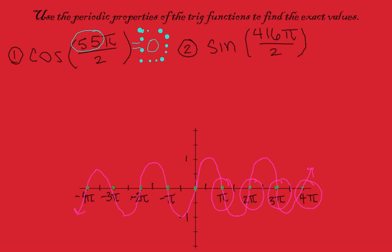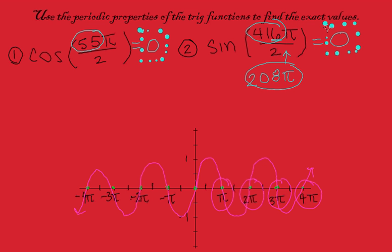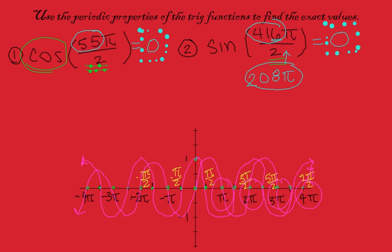If we look at this problem, this is not a whole number pi — it's still a pi half. But 416 divided by 2: since 416 is even, we can obviously divide that. So we actually have 208 pi, which means that's a whole number pi, and so just like the last problem, this one also equals 0. Your rule of thumb is that if it's an odd number, then the cosine will be 0, and if it's an even number, then the sine will be 0.